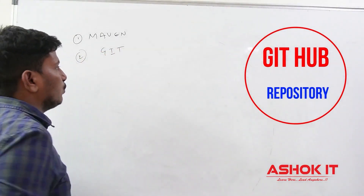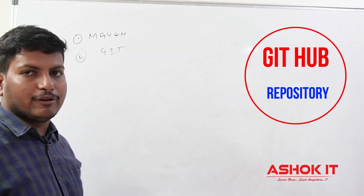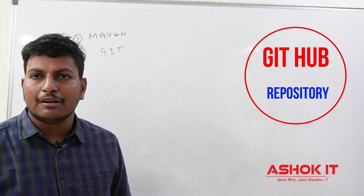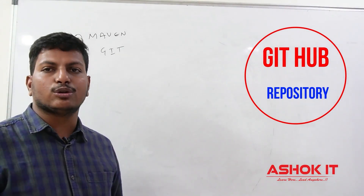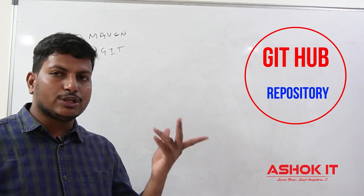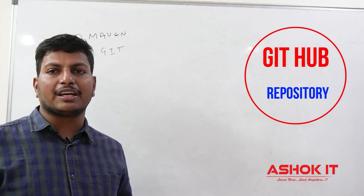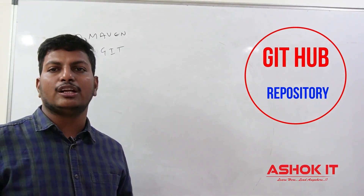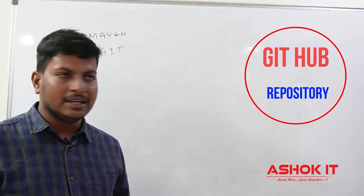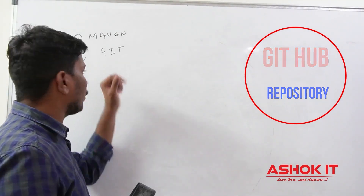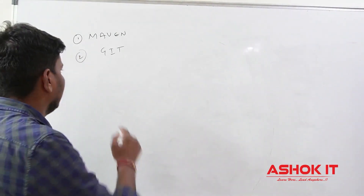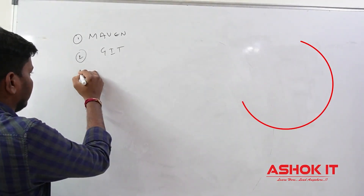Second one is Git. Git we are going to use as version control software. The project development team will store their source code into a Git repository. We need to take the code from the GitHub repository to perform our DevOps operations. Git we are going to call as repository software.